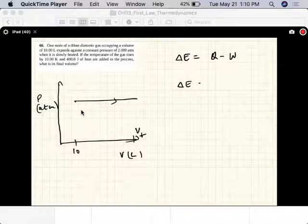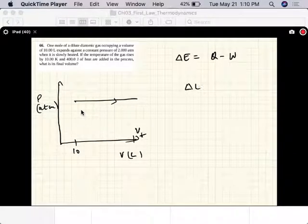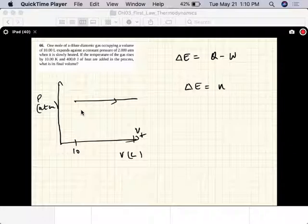Alright, Delta E. So here's Delta E is n C_V Delta T.